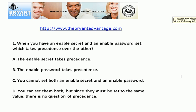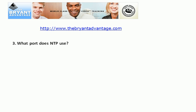For the NTP hierarchy, atomic clocks are at the top and the top level is stratum zero. Keep in mind that Cisco routers cannot get their time directly from a stratum zero device. For ACL configuration, remember that NTP uses UDP port 123.